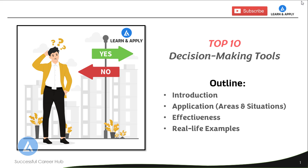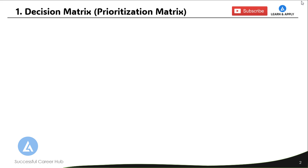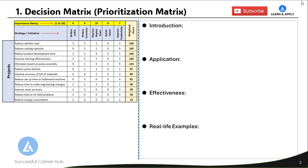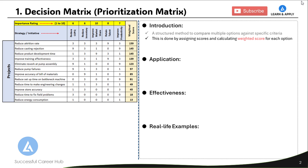Now let's dive into the first tool, which is the decision matrix. The decision matrix is a structured method to compare multiple options against specific criteria. This comparison is done by assigning scores and calculating the rating score for each option. The highest score in the prioritization matrix is also an indicator of highest priority.